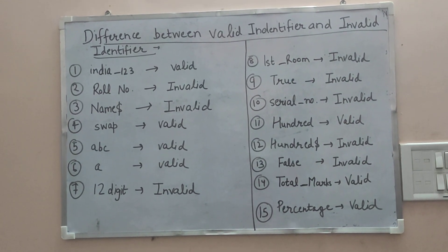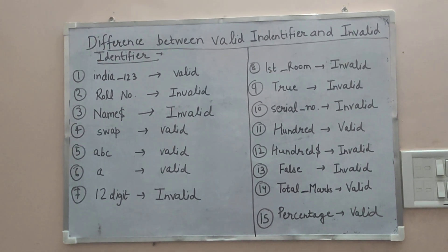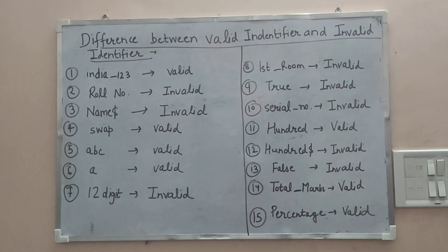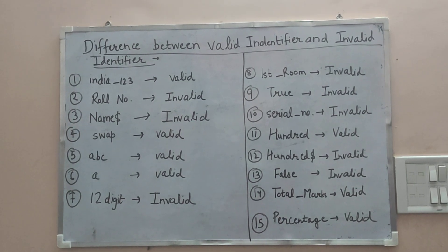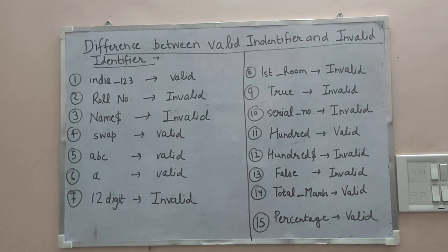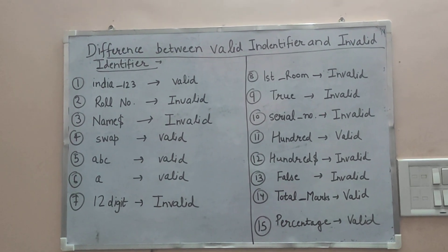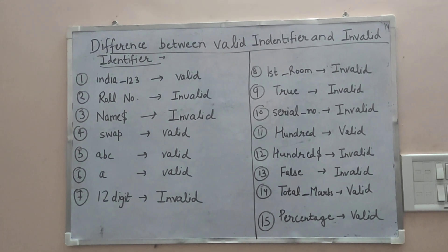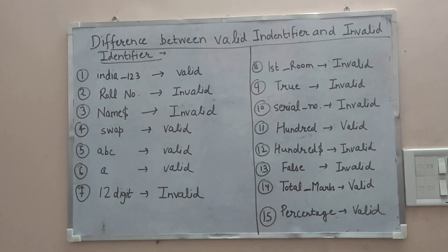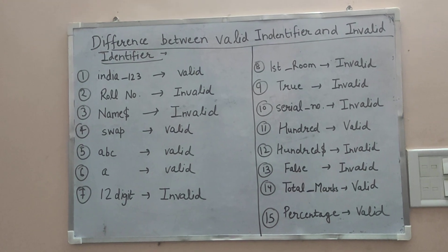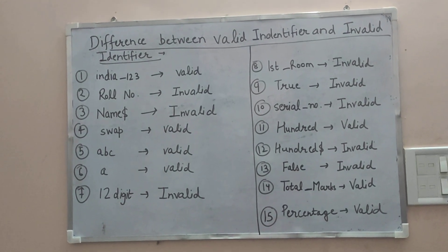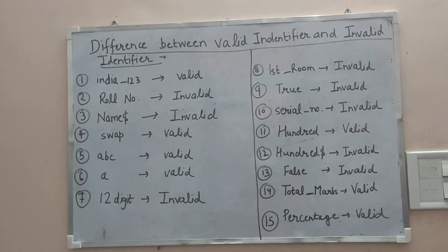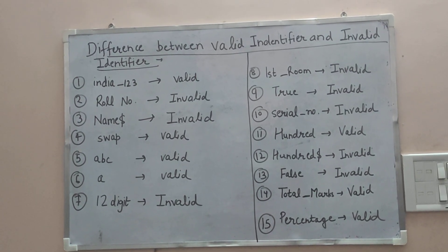The seventh starts with a numeric value, which is not allowed. We cannot start any identifier with a numeric value, a digit, or an integer value, so this is invalid. The eighth one is also invalid because it starts with an integer value as well.